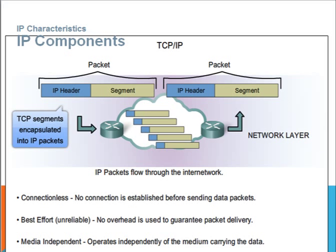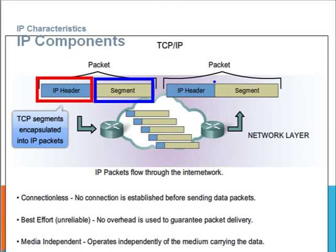Let's take a look at the components of the IPv4 packet. In general, the IPv4 packet consists of the header and the data, which is broken up into different segments. In order to transport information from one end to the other, we have to break it up into smaller parts known as segments, and these are appended with the IP header so that they know how to reach their destination.